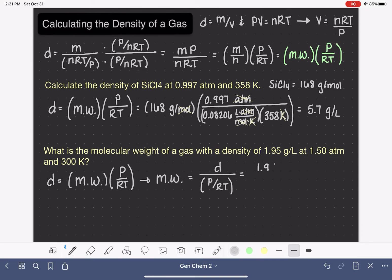The density is 1.95 grams per liter. That is the top. And that is divided by the pressure, which is 1.50 atmospheres.